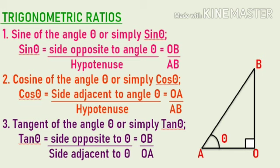The first ratio is sine of angle theta, simply sine theta. It is equal to the side opposite to angle theta, that is OB, divided by hypotenuse, that is AB. So sine theta equals perpendicular by hypotenuse, which is OB by AB. The second ratio is cosine of angle theta, or simply cos theta. It equals the side adjacent to angle theta divided by hypotenuse, so cos theta equals OA by AB, that is base by hypotenuse.